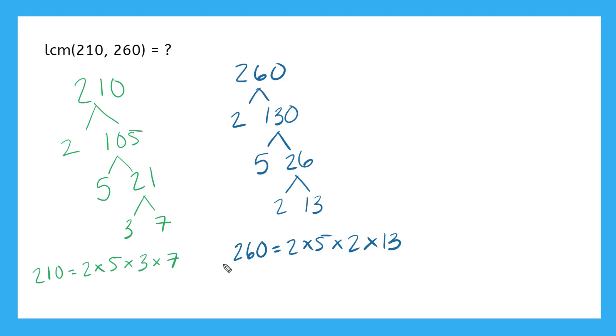So if I'm going to find my least common multiple now, I can say that the LCM of 210 and 260 will need to be representative of 210, so it has to have all four of these, which is 2 times 5 times 3 times 7. So there is my 210.